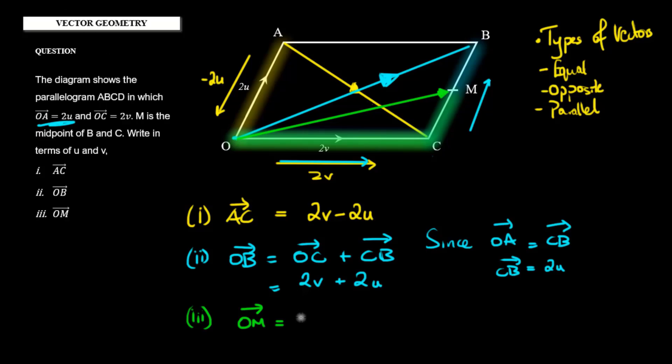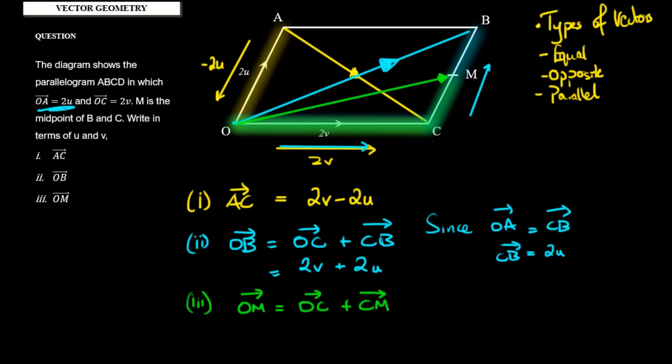Well, I could travel from O to C and then from C to M. So OM is OC plus CM. Now what do we know? Again, we already know that OC is 2v, so I can write that as 2v. But do I know what vector CM is? Well, I know that M is the midpoint of B and C, and I already know what CB is.